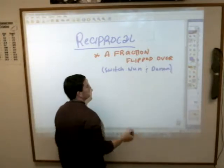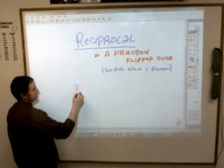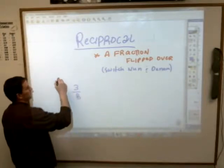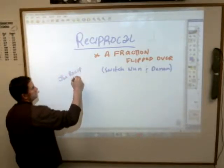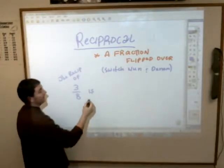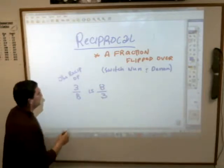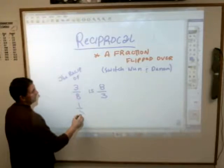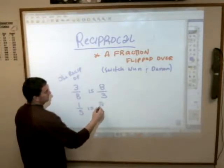And it's a pretty simple little thing here. For example, if you have 3 8ths, the reciprocal of that, the reciprocal of 3 8ths simply is 8 3rds. The reciprocal of 1 5th is 5 over 1.